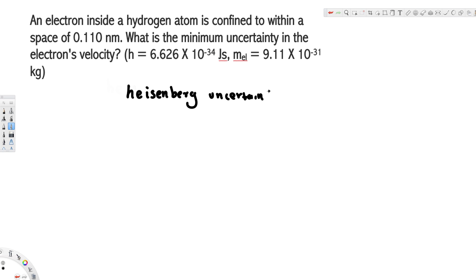The uncertainty principle states that Δx times Δv is equivalent to h over 4πm. Since we are trying to find the velocity, we can move...